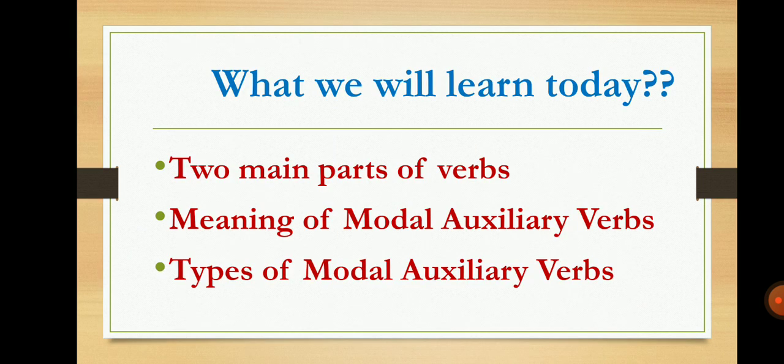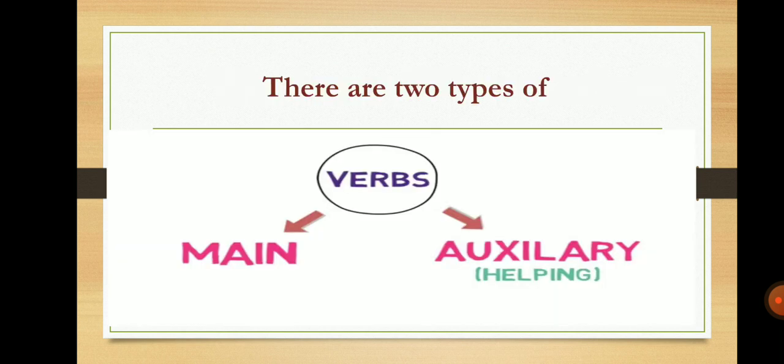What we will learn today is two main parts of verbs, the meaning of modal auxiliary verbs, and the types of modal auxiliary verbs. There are two types of verbs: main verbs and auxiliary verbs. Main verbs are action verbs — swimming, cleaning, washing, helping, speaking, talking, listening. These are all called main verbs. Today we are going to learn about auxiliary verbs, that is the helping verbs.